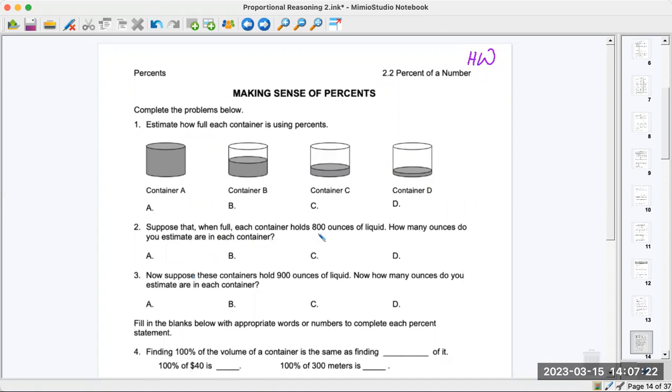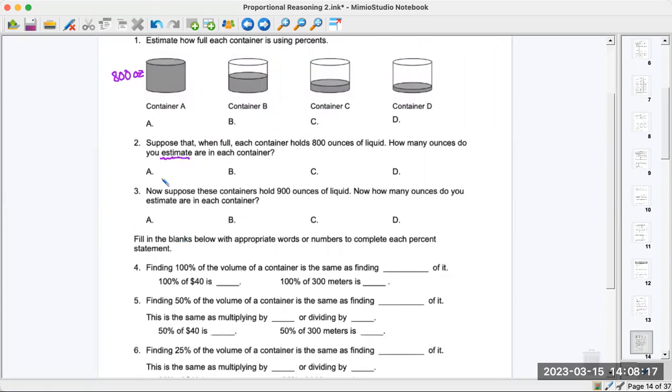Suppose that when full each container holds 800 ounces of liquid. Percent is really not telling us an amount. So each container holds when it's full 800 ounces of liquid. How many ounces do you estimate are in each container? Well, this one is definitely full so it's 800 ounces. How much do you think this one is? How many ounces here? It's an estimate. So it's not totally. Your answers go right here. This one says 100%. Container A has 100%.